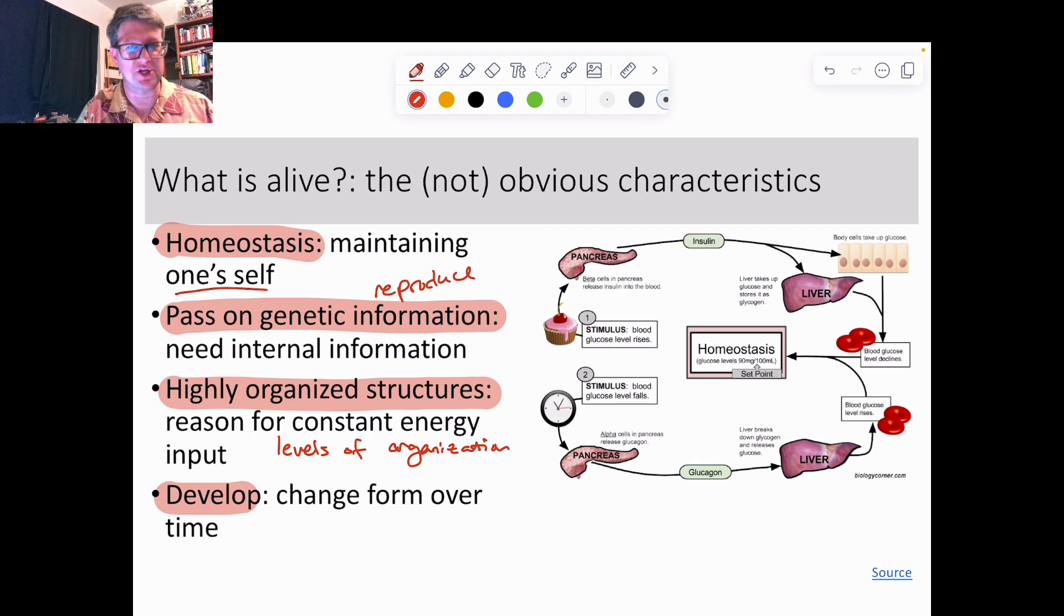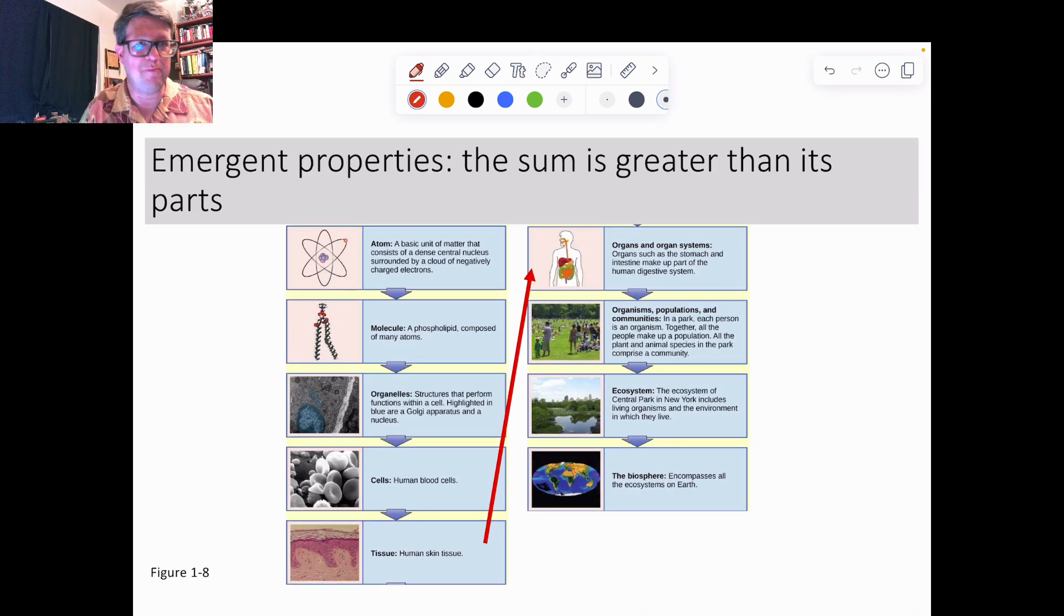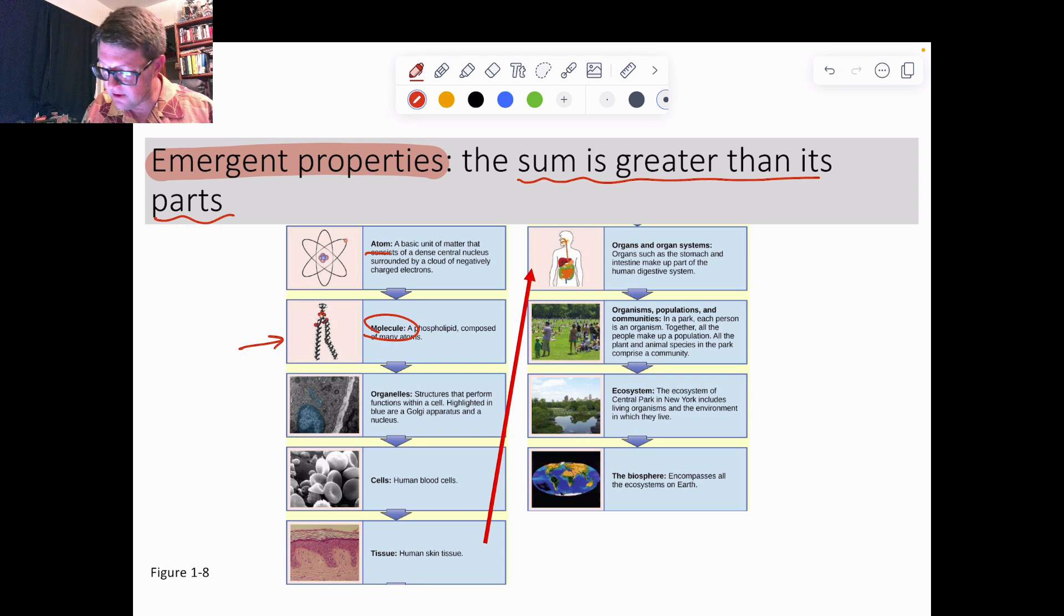We can call that embedded organization an emergent property. This can be described as the sum is greater than its parts. What we mean by that is if I were to look at any type of organism, it's composed of parts. Molecules are composed of atoms. Atoms can do certain things, but when they're arranged in a particular way we can create molecules like lipids, carbohydrates, proteins, nucleic acids. If you take those four compounds and salts and water and stuff like that, you can build cells.